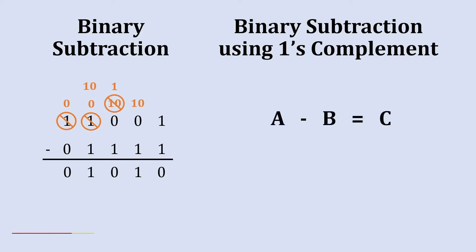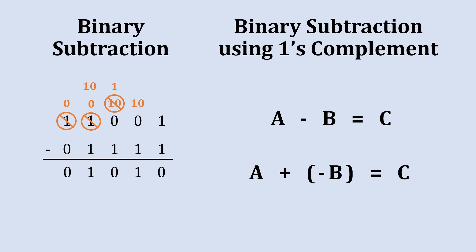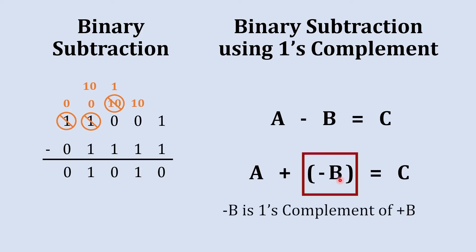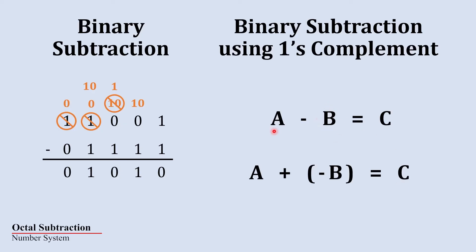In normal binary subtraction we do a minus b equals c, but in binary subtraction using one's complement method we do a plus of minus b equals c. This means we take the one's complement of b and then add that one's complement with a to get the subtraction c, whereas in the normal method we directly subtract b from a.